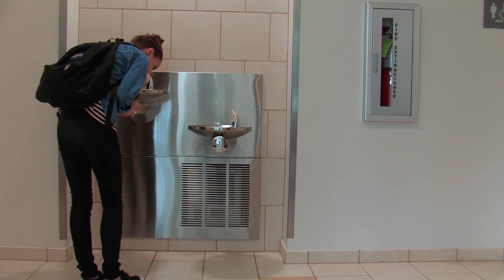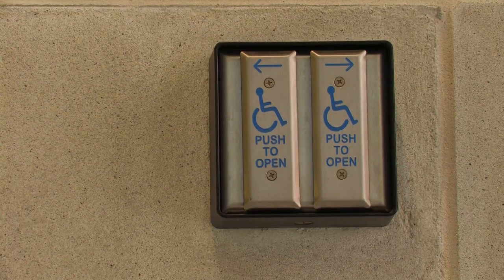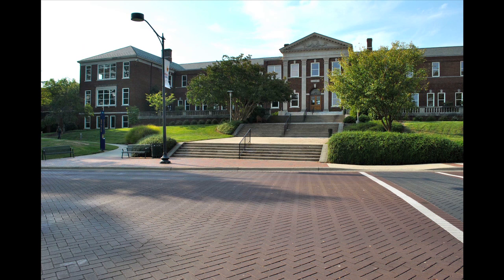Please join us in viewing how the seven principles of Universal Design are reflected in the new School of Education building. First, the main entrance to the Curry Building was not accessible to all users, because to enter, one had to ascend three flights of concrete stairs. Although a long ramp did allow access to the side entrance of the lower level, it did not permit users who could not ascend stairs to enter through the main entrance.